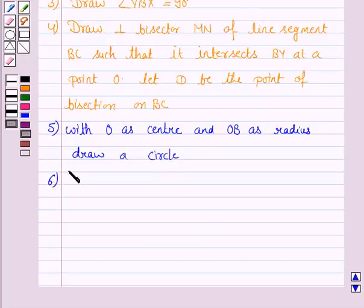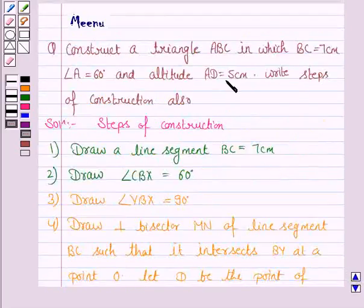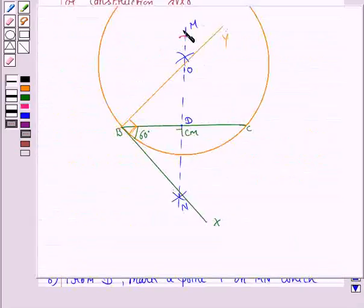Now, the sixth step is from D mark a point P on MN which is at a distance 5 cm. Since we need to have altitude as 5 cm, so this is the point P on MN which is at a distance 5 cm from D.